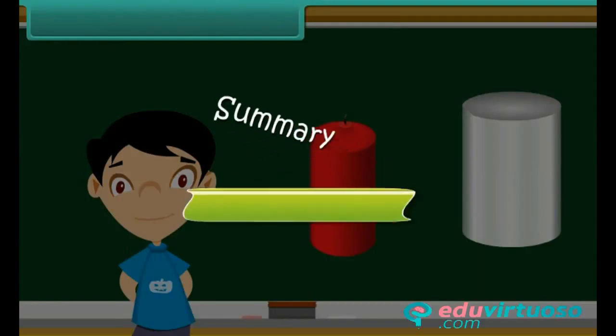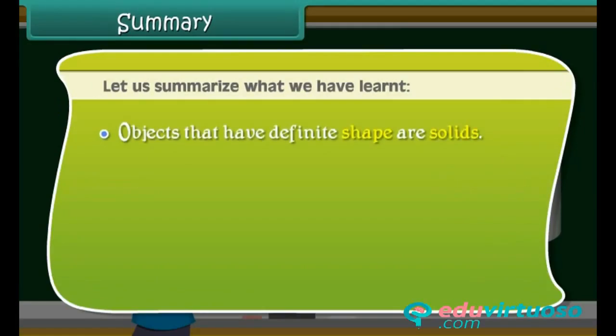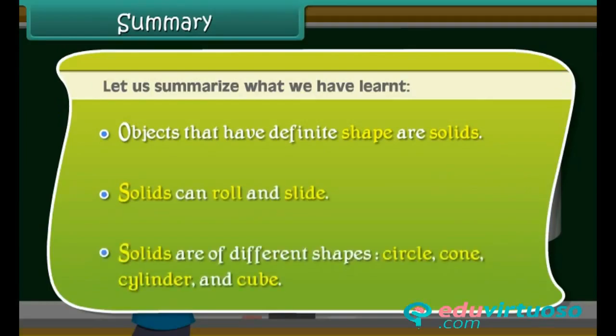Summary: Let us summarize what we have learnt. Objects that have definite shape are solids. Solids can roll and slide. Solids are of different shapes: circle, cone, cylinder, and cube.